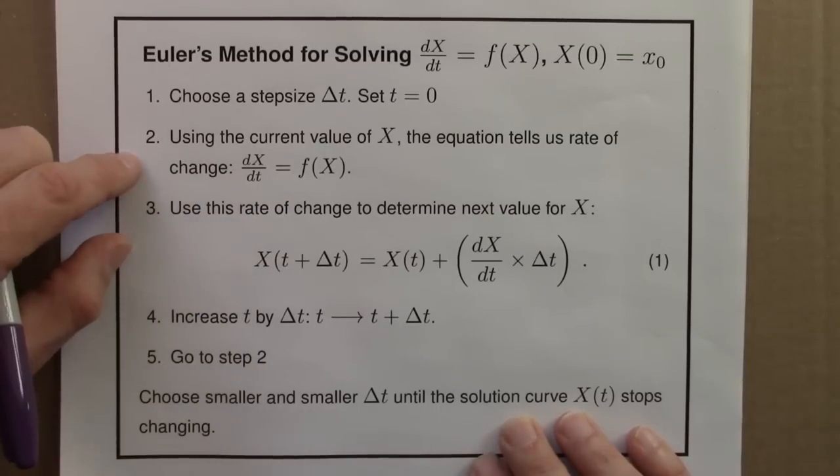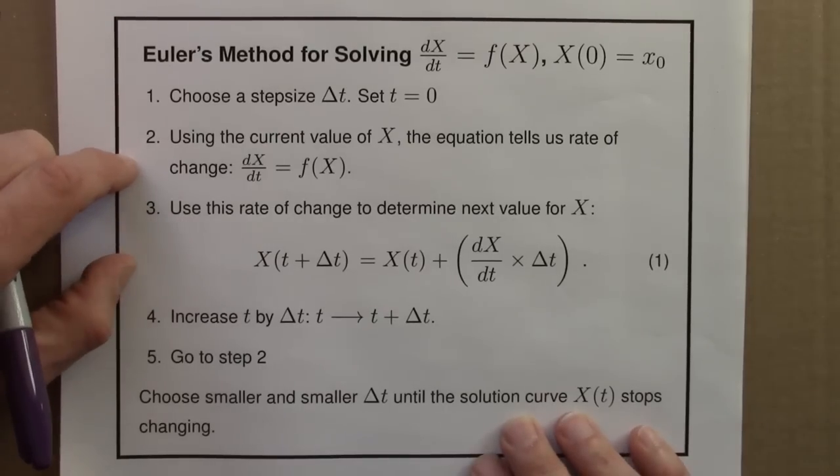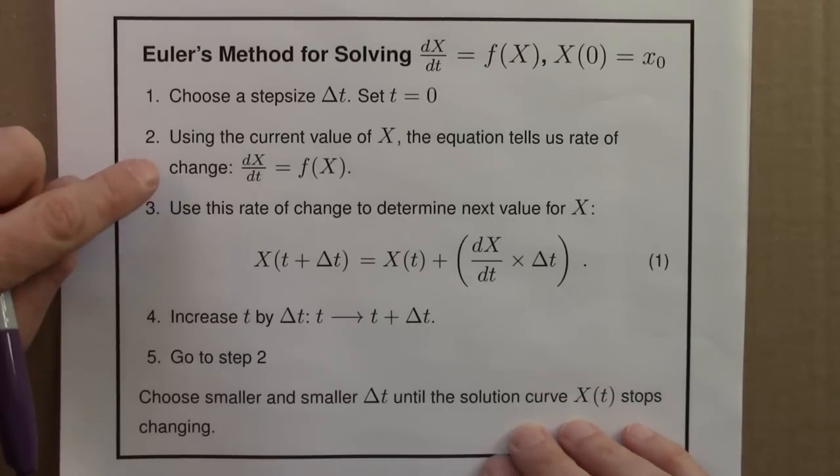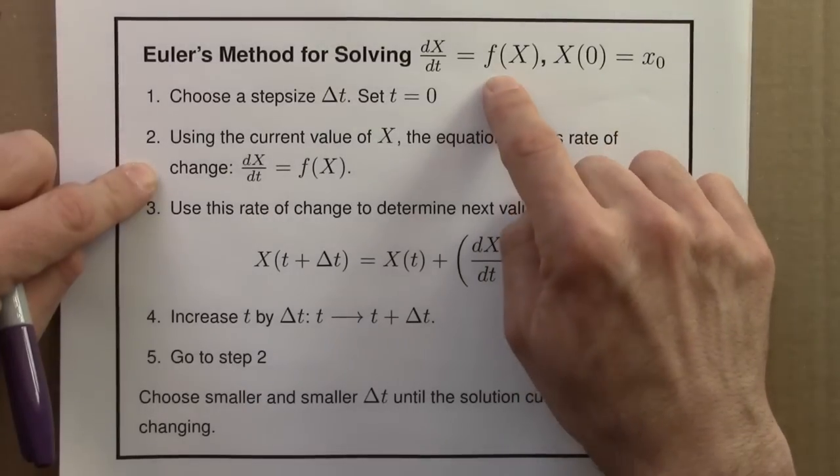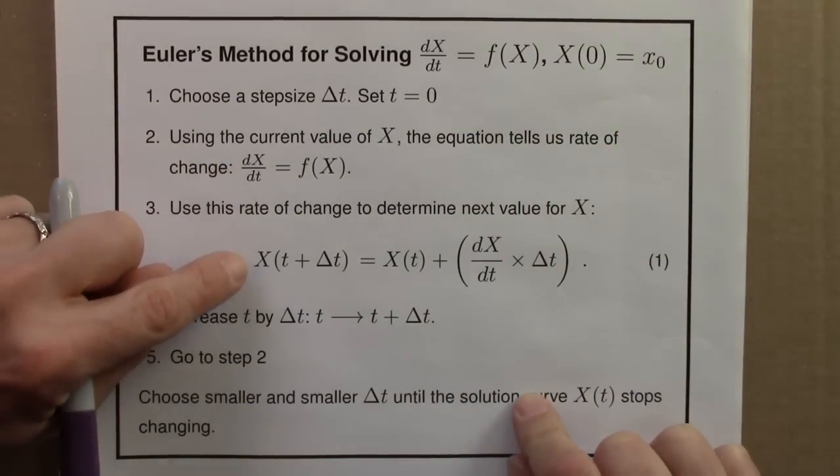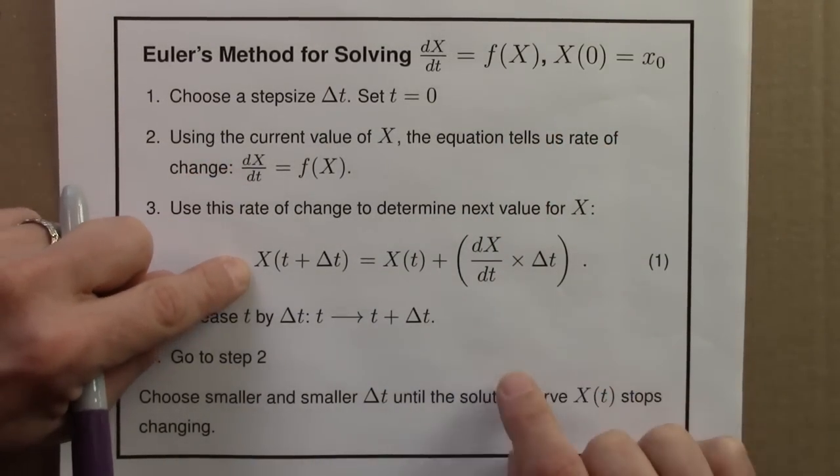So 2 and 3, these are the key steps here, we're constantly shuffling back and forth. The function, the differential equation, tells us the derivative. Here we use the derivative to figure out the value of x.